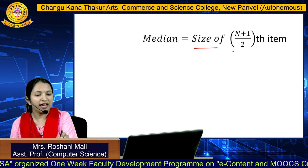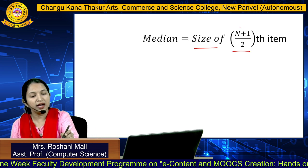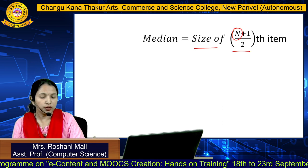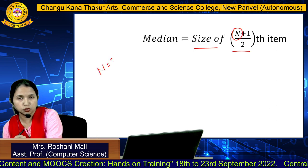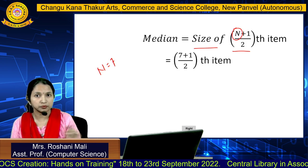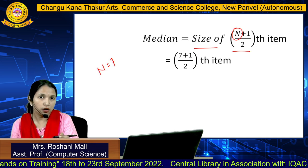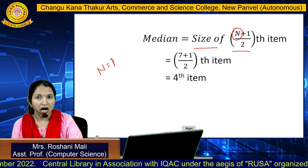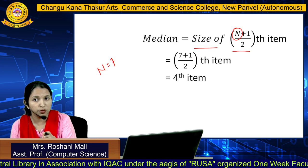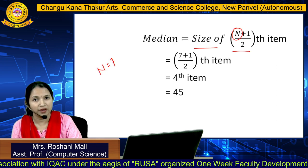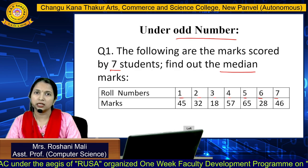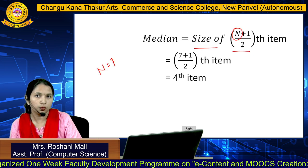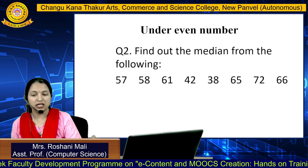Now we apply the formula: size of (n+1)/2 th item. Here n is the number of observations, which is 7. So (7+1)/2 = 8/2 = 4th item. This formula gives the position of the median value. The 4th item from the arranged series is 45, so your median is 45.